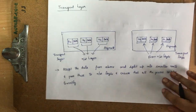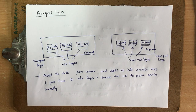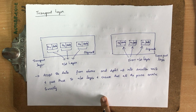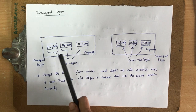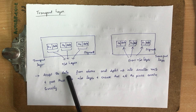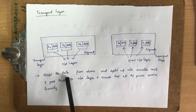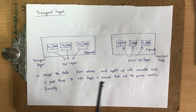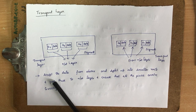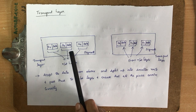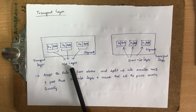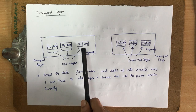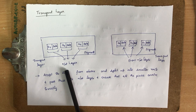The transport layer divides larger data into smaller sub-segments and sends them to the network layer. It is responsible for ensuring that all smaller segments arrive at the other end properly and are reassembled correctly. This segmentation and reliable delivery is the main functionality of the transport layer.